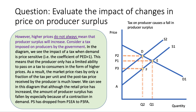Therefore the producer will only keep price P3, which is lower than they had before, and they're selling less — quantity has fallen. So although the retail price has gone up, the amount the producer gets and hence the amount of producer surplus has fallen because of the contraction in demand and the weaker price. The new level of producer surplus is P3FA, which is much less than P1EA. In this case, a higher price caused by a tax actually reduces producer surplus.